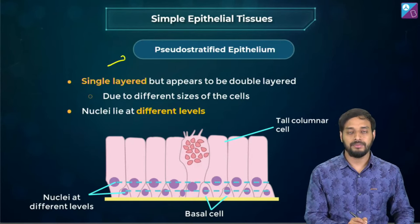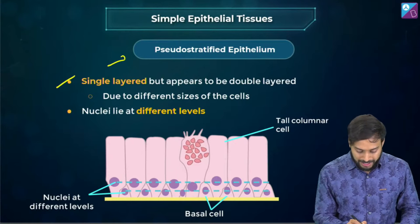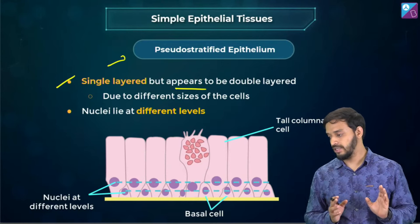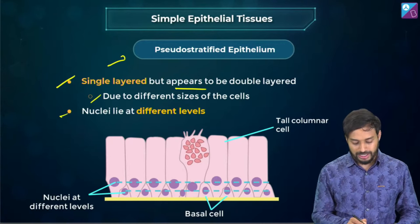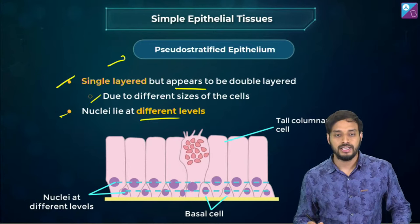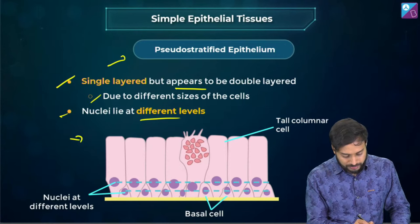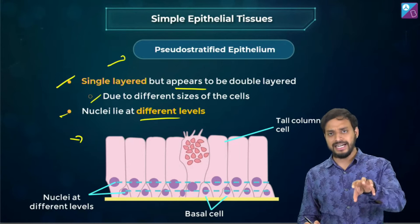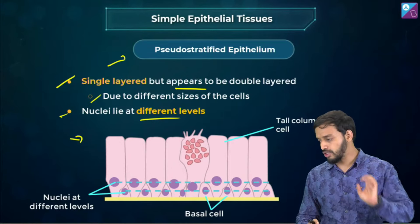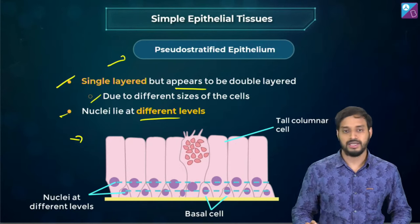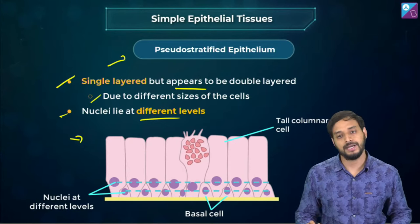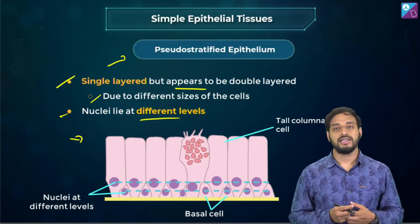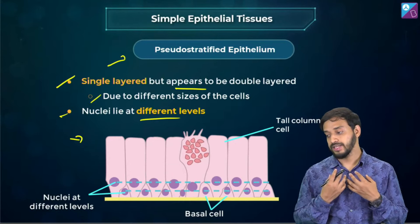Pseudo-stratified epithelium — it is single layered but appears to be double layered due to different sizes of the cells, causing nuclei to lie at different levels. These are pseudo-stratified. They may be ciliated or non-ciliated. Ciliated pseudo-stratified epithelium is found in the trachea — the cilia help move mucus and remove foreign particles.